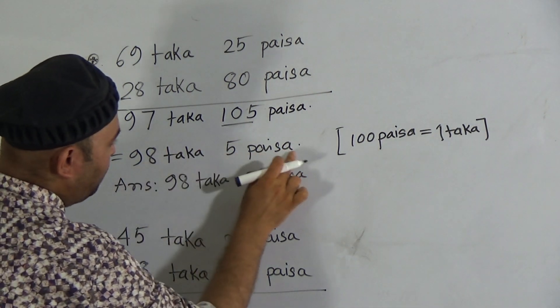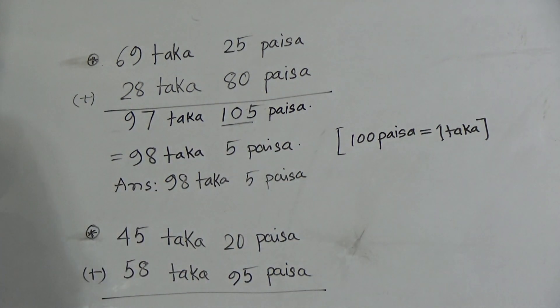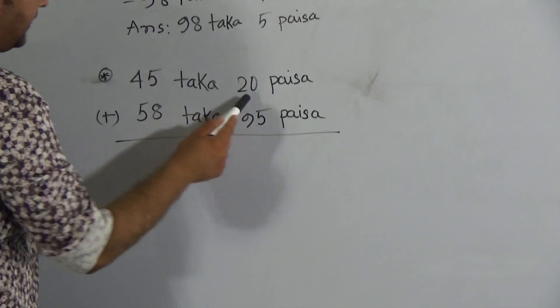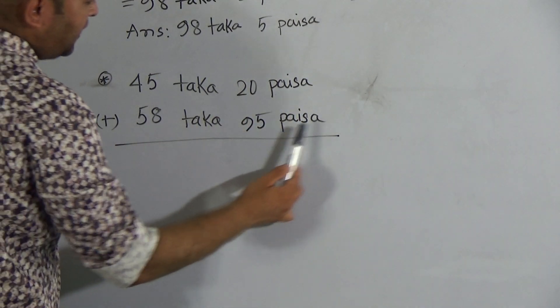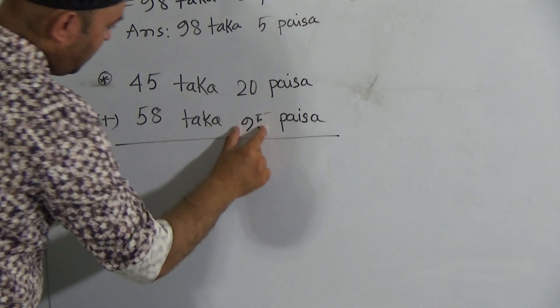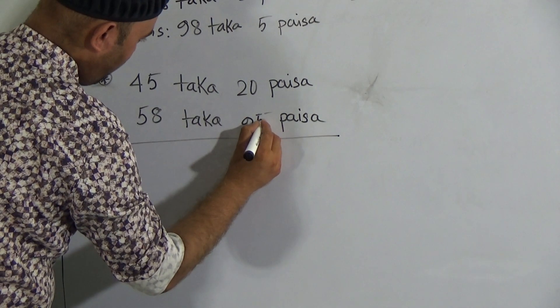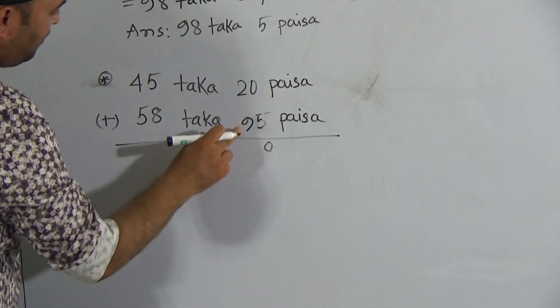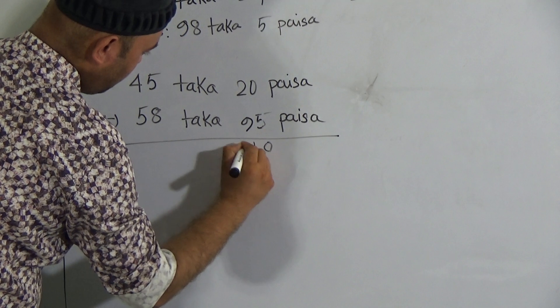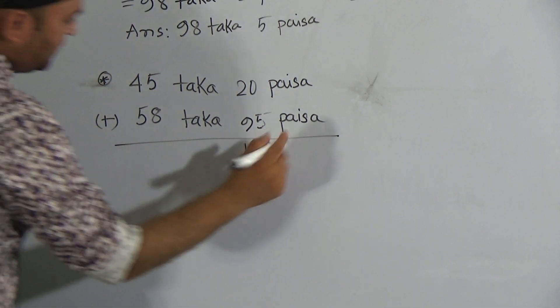Now let's go to the next one. Here is 45 taka and 20 paisa plus 58 taka and 95 paisa. As the regular way we can add. This 95 and 20, 5 and 0 it will be 0. 9 and 2 it will be 11, so here it will be 110 paisa.